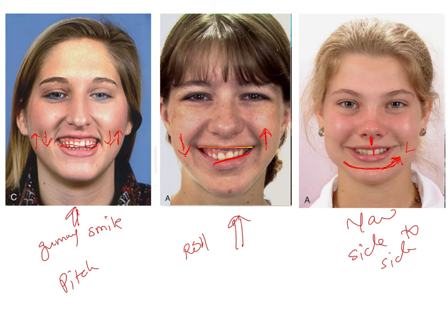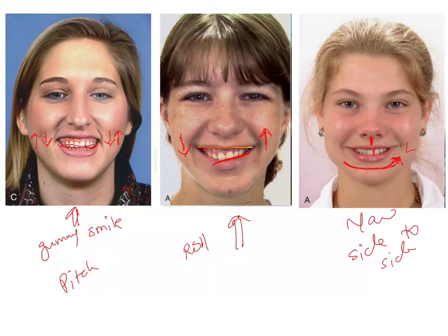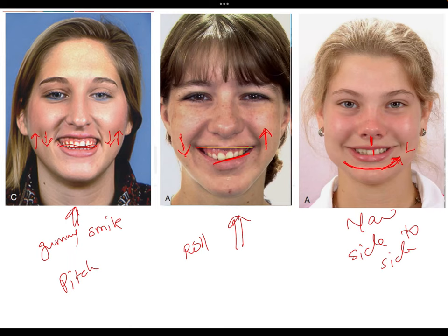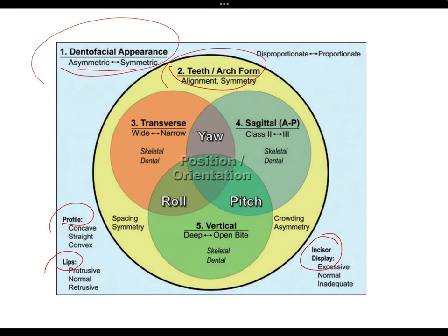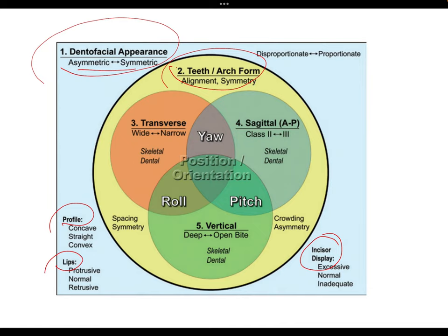These are the characteristics included in the Ackermann and Proffitt classification. Based on the modifications, a new system was given. In the original classification, the envelope of the Venn diagram consisted of intra-arch alignment and symmetry, with the profile as the first circle. But in the modified classification, the outermost envelope became dentofacial appearance — given maximum priority — relating the dentition to the face, including whether the dentofacial appearance is symmetric or asymmetric, the profile, lips, and incisor display. Intra-arch alignment and symmetry was moved to the second position, becoming the outermost circle.